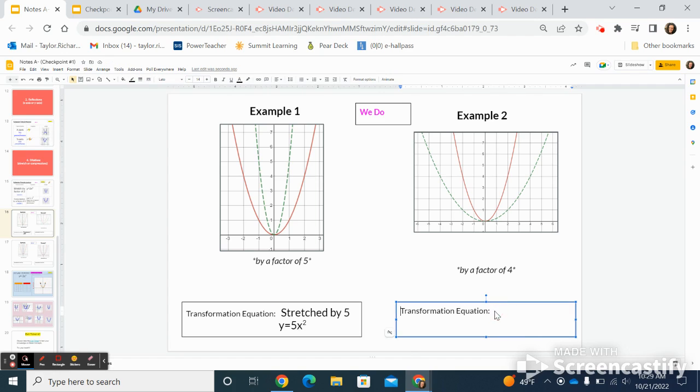All right, my next one. I'm starting at the red graph. The green one is getting wider from the red. So this is going to be compressed and I'm telling you that it's compressed by four. So I'm going to say compressed by four.